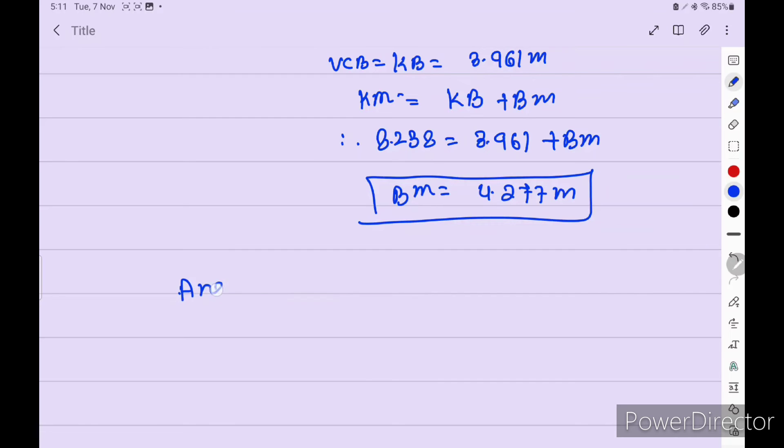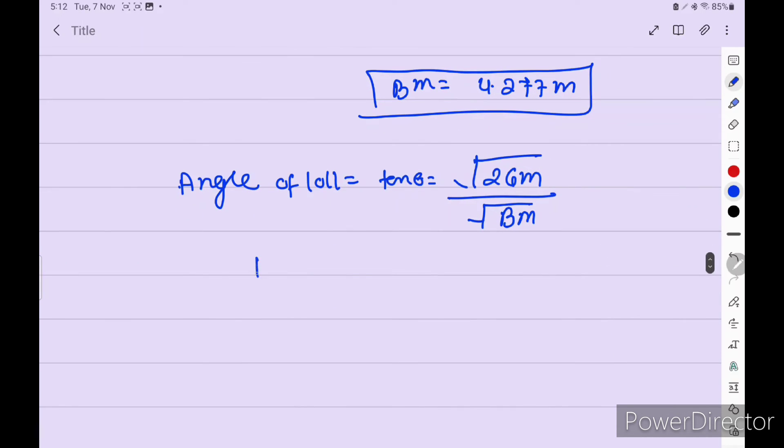Now angle of loll is equal to tan theta is equal to 2 square root GM upon BM. So angle of loll is given tan 9 degree is equal to 2 into GM upon BM we just calculate 4.277.